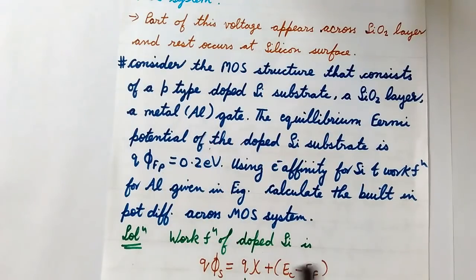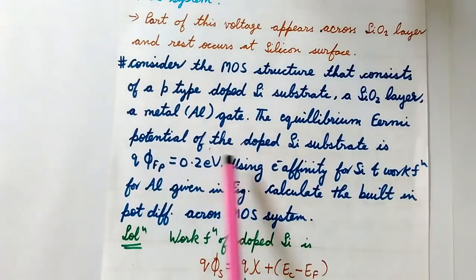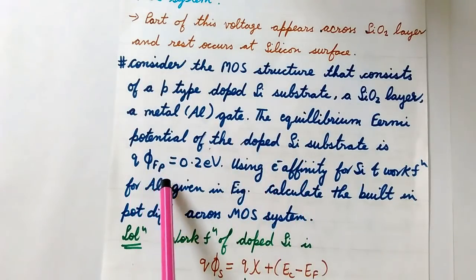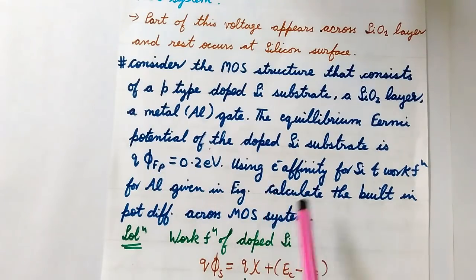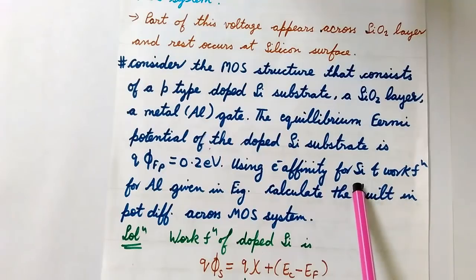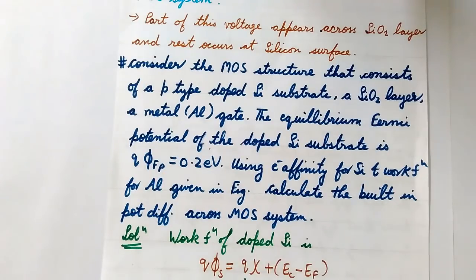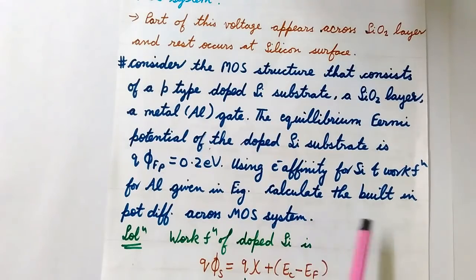The value of the equilibrium Fermi potential of the doped silicon substrate is given as q·φFP = 0.2 electron volts. Using the electron affinity for silicon and the work function for aluminum given in the figure — which we discussed in our last video on energy band diagrams of MOS components — we have to calculate the built-in potential difference across the MOS system.